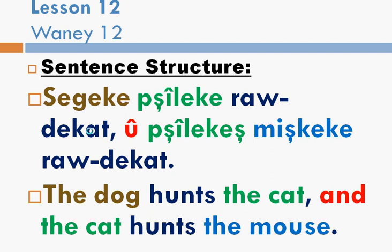Look at this example. The dog hunts the cat and the cat hunts the mouse. I know this is a bit of a weird example but I've used this example to talk about a few things that I'll mention now.